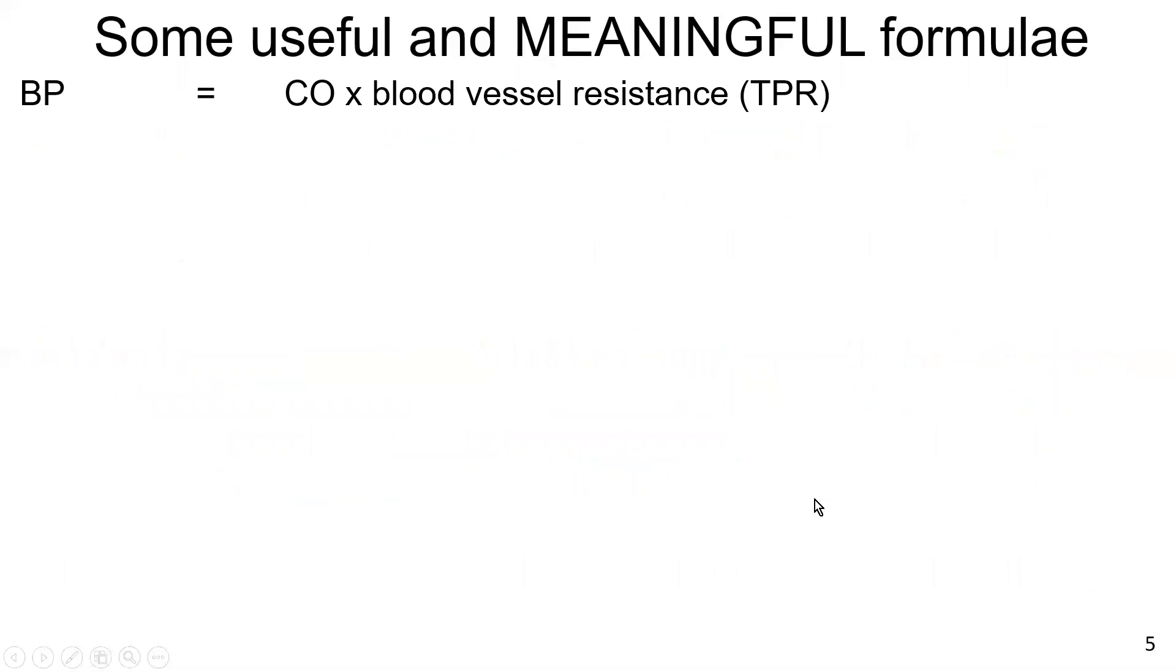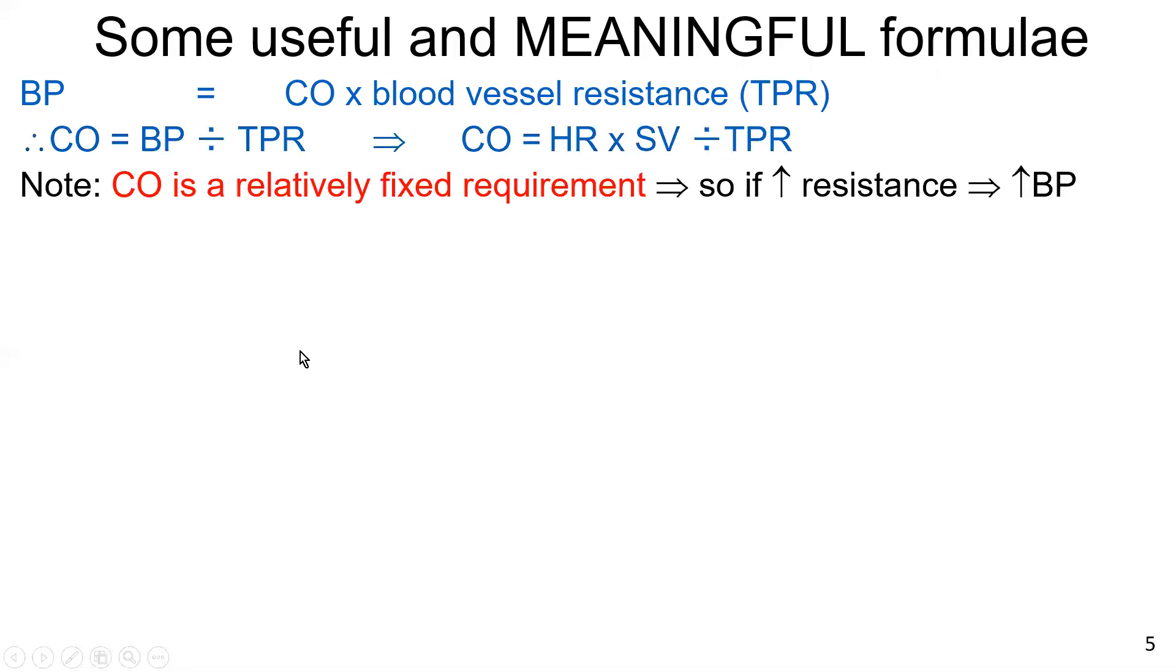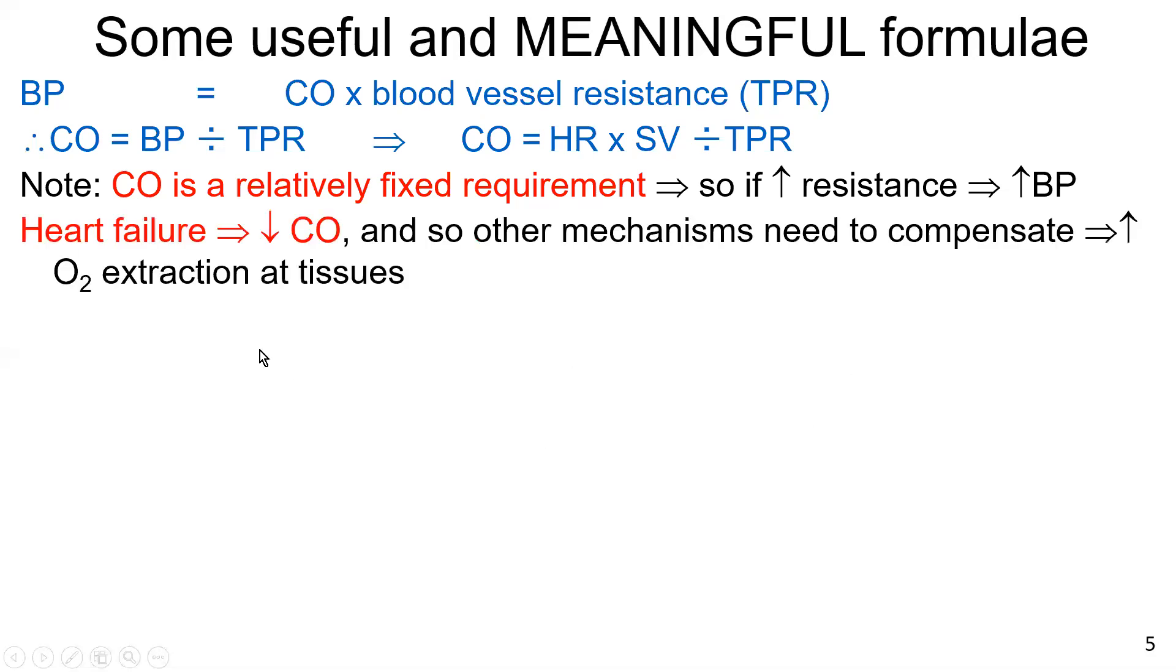So I'm just moving on to another formula, blood pressure equals cardiac output times total peripheral resistance. You probably have seen this in your undergraduate studies. Therefore, cardiac output equals blood pressure divided by total peripheral resistance. And if we break cardiac output down into heart rate times stroke volume divided by TPR, then we see how that works. Cardiac output is a relatively fixed requirement. So if there's increased resistance, there's an increase in blood pressure. In heart failure, there's a falling cardiac output. And so other mechanisms need to compensate, such as increased oxygen extraction in the tissues. And I just covered that.